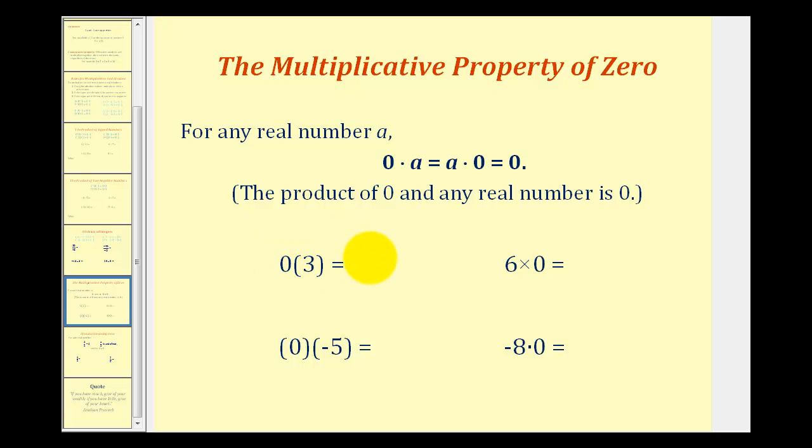So zero times three is equal to zero. Zero times negative five is equal to zero. Six times zero is equal to zero. And negative eight times zero is equal to zero.